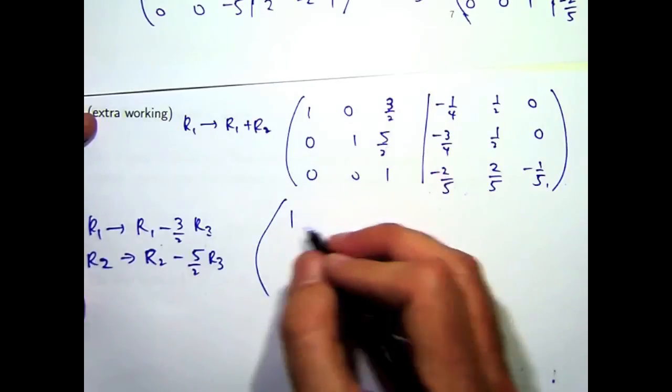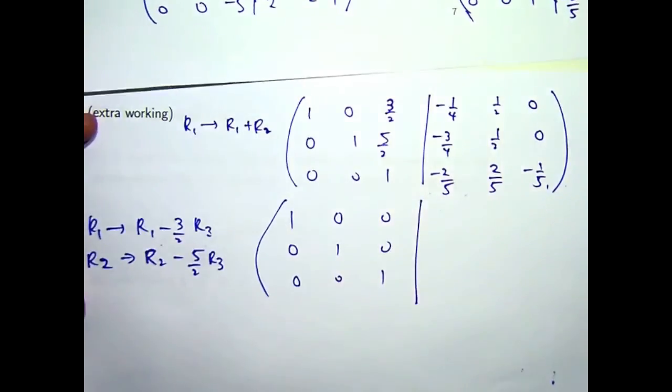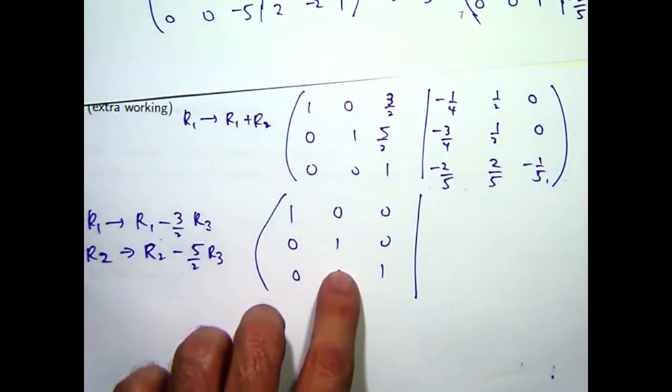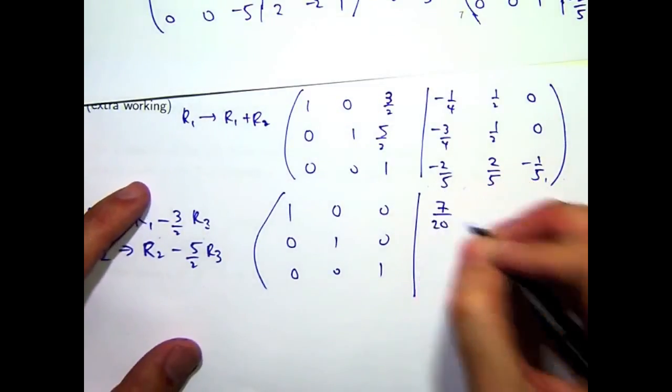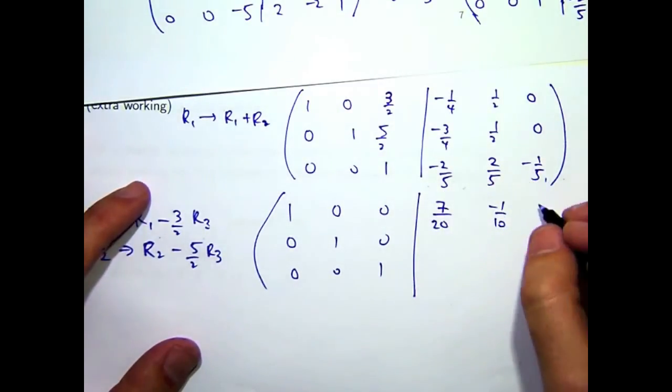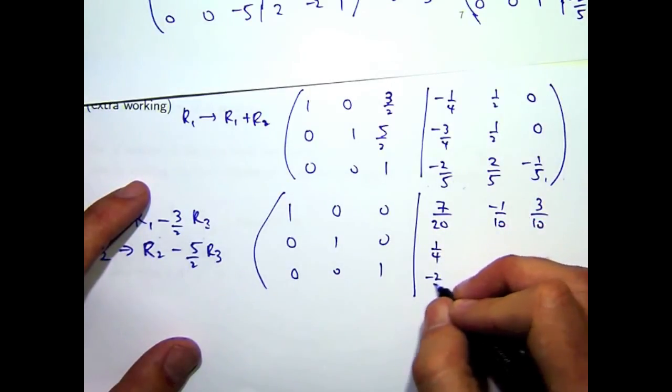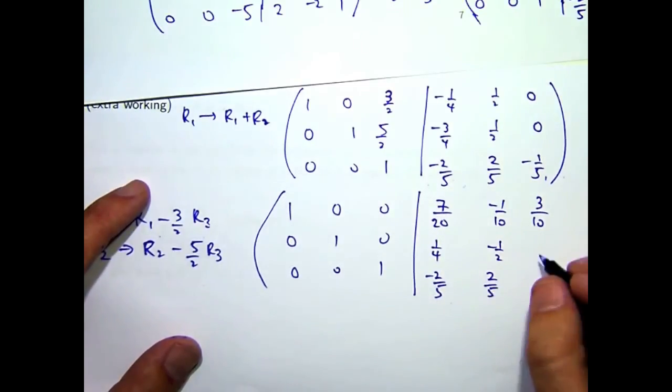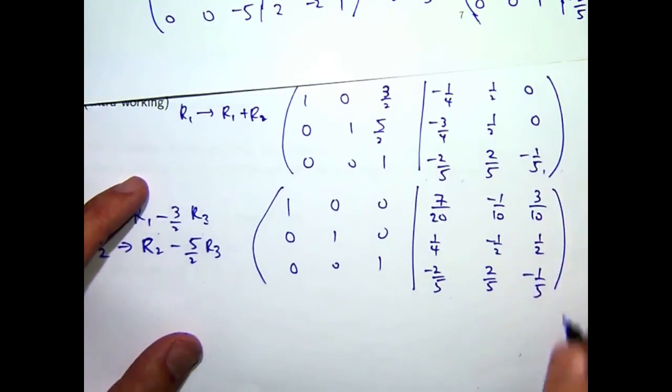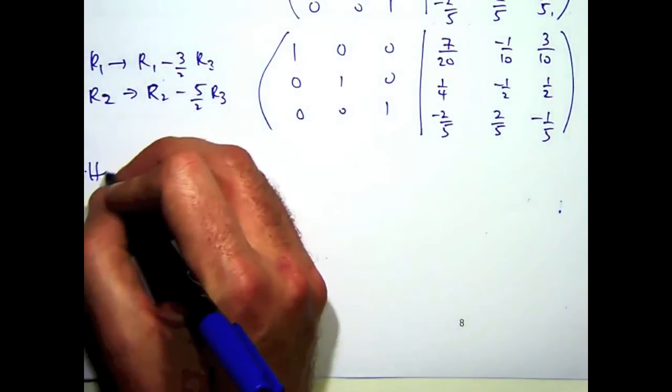And you'll get the following. So here these things are going to cancel out. And lo and behold, we've got our identity matrix on the left-hand side. So what are we going to get on the right-hand side? Well, with a little bit of care, you should end up with the following. So this right-hand side then is the inverse of your matrix A.